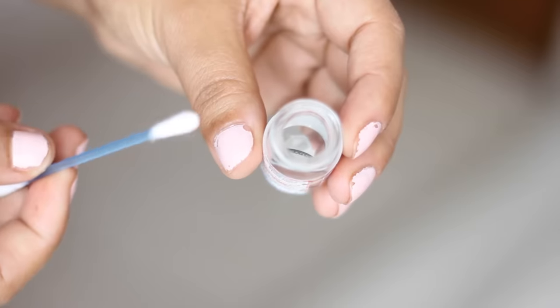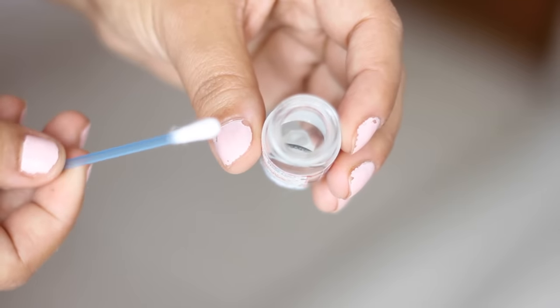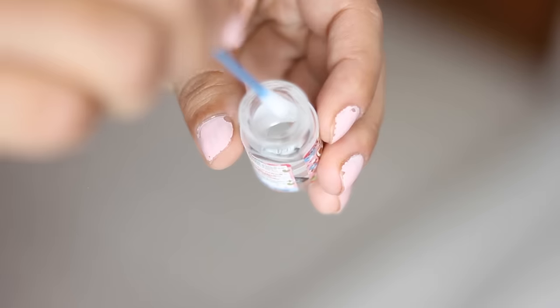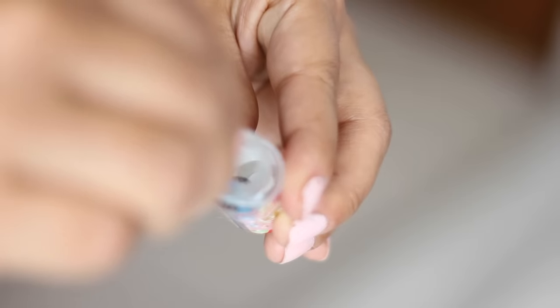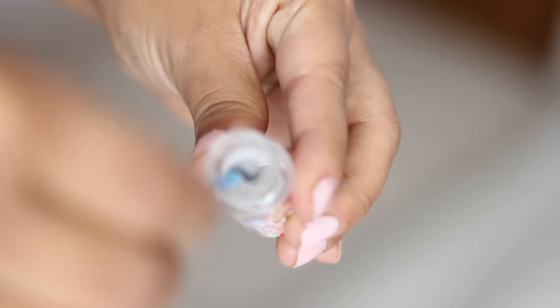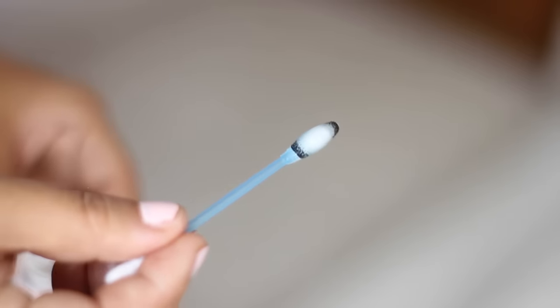Since it can be pretty tricky getting the lens out from the glass bottle with your fingers, what I like to do is take a cotton bud and insert it into the bottle and then get the lens to wrap around the cotton bud. This is a lot easier than doing it with your fingers.